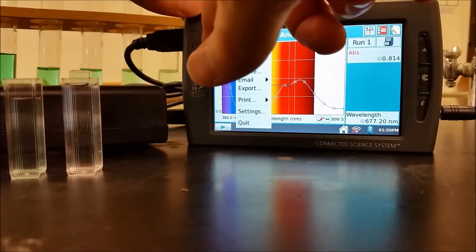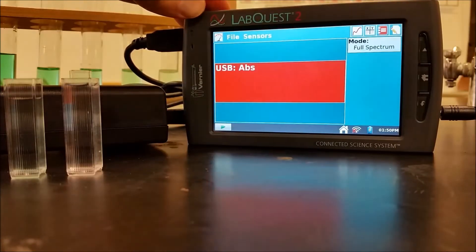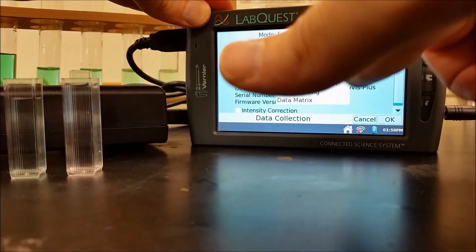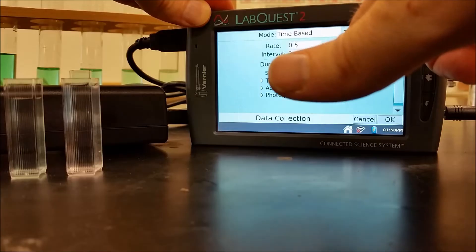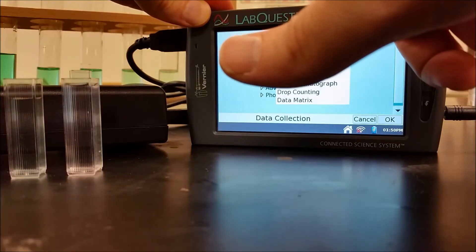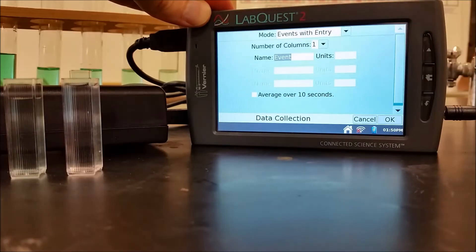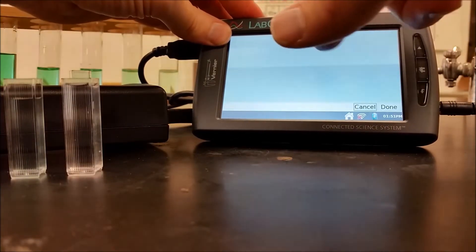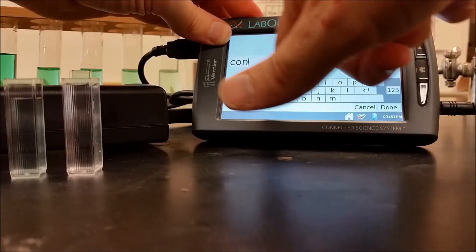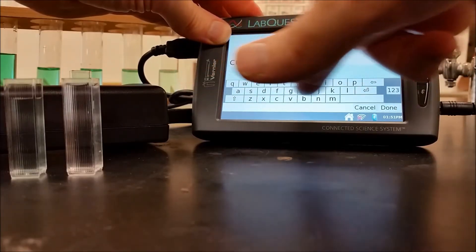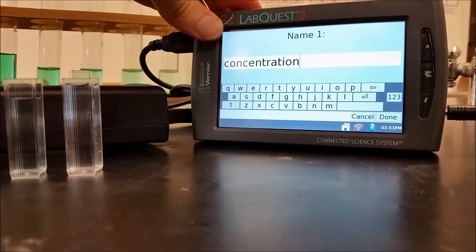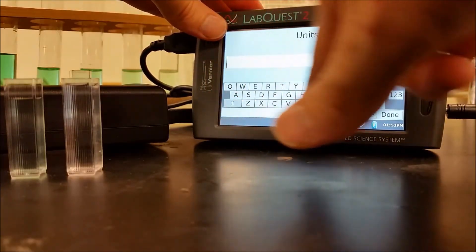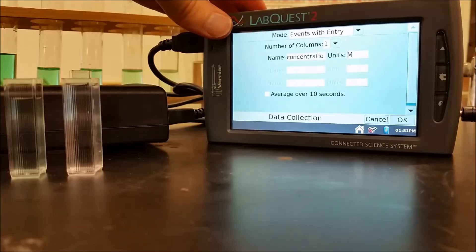So now what I want to do is go to this meter tab over here. And then I want to go from doing the full spectrum to doing events with entry. And so then I'm going to type in concentration with units of molarity. So there's concentration. I'll hit Done. And then for the units, I'm going to put molarity, just a capital M. And then I'm set.